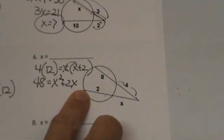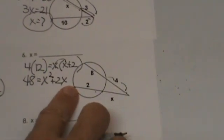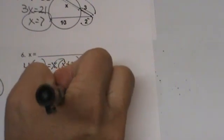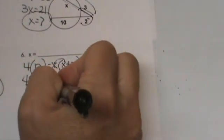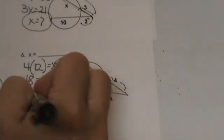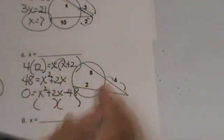What do you do with quadratics to solve them? You get them in descending order and factor. Let's get this in descending order. We have x² plus 2x and I am going to bring this 48 over and make it negative 48, equal to 0. Now we have to factor it.